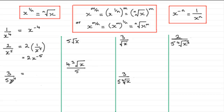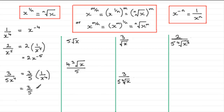The next example demonstrates what happens when we put a number in the denominator. We see this as 3 fifths multiplied by 1 over x to the power 4. We've already seen that 1 over x to the power 4 is the same as x to the power minus 4, so this becomes 3 fifths multiplied by x to the power minus 4. You could also write this as 3x to the power minus 4 all over 5 — either way, both are correct.